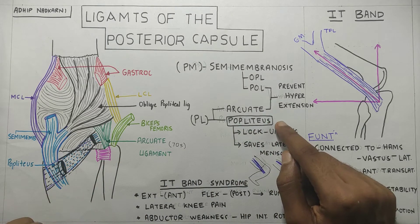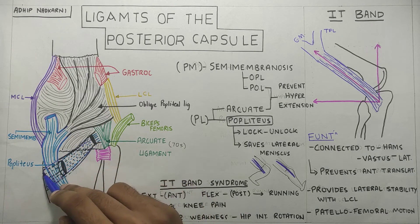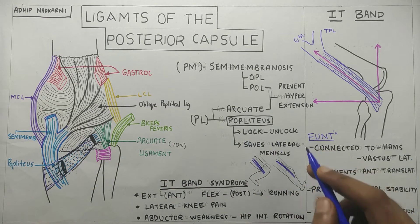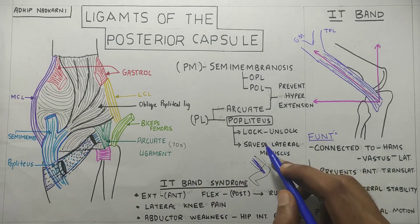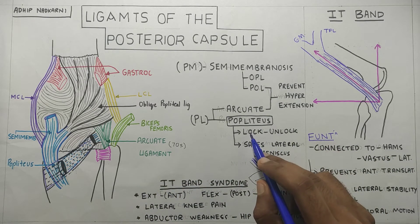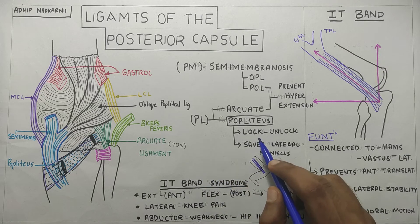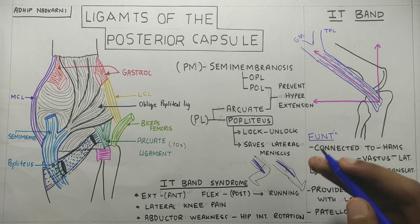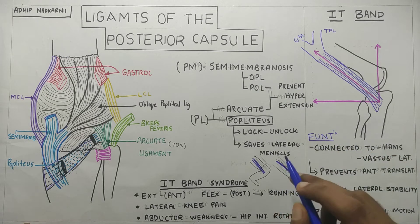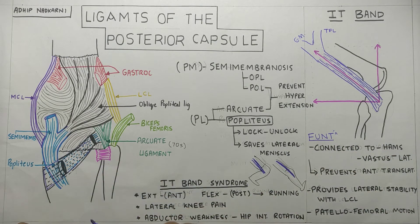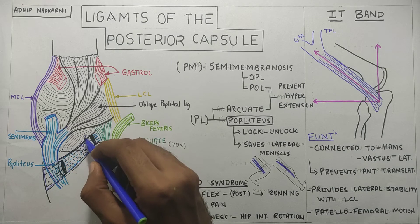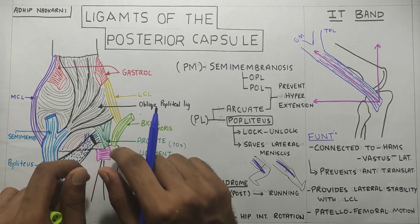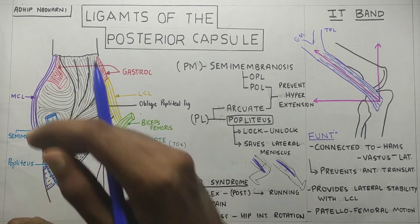On the posterolateral side there is also the popliteus tendon, which is a triangular shaped muscle present in the popliteal fossa. It has a function of locking and unlocking of the knee joint. In brief, locking is at the end of extension where the tibia rotates laterally in open kinematic chain and rotates medially in open kinematic chain when it starts to flex from the completely extended position. It also saves the lateral meniscus from getting injured during flexion by pulling it posteriorly — the popliteus attaches to the posterior horn of the lateral meniscus and pulls it posteriorly during flexion.